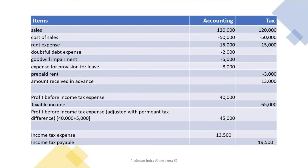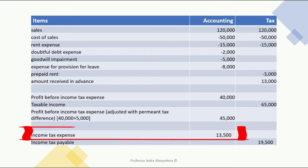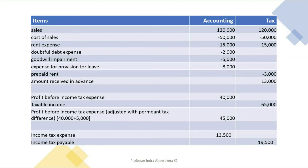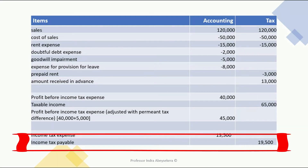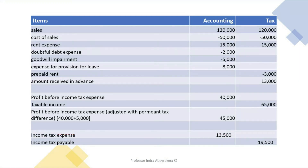The income tax expense at the rate of 30% on $45,000 is $13,500. Income tax payable at the rate of 30% on taxable income of $65,000 is $19,500.